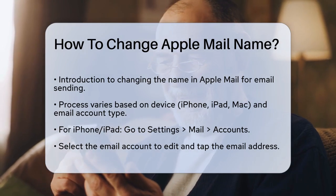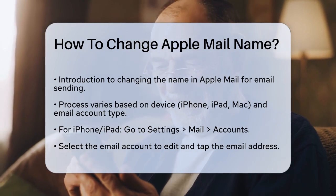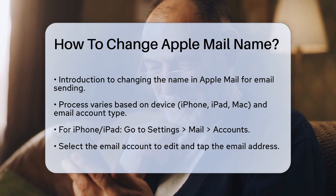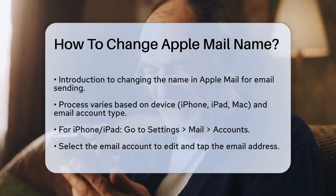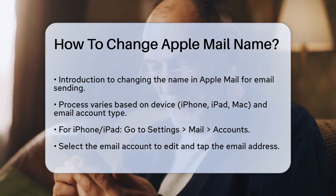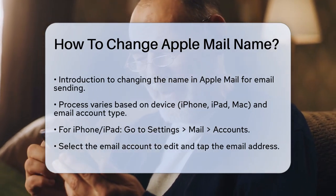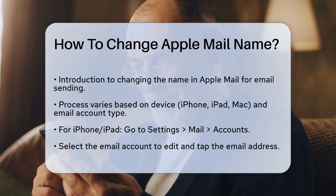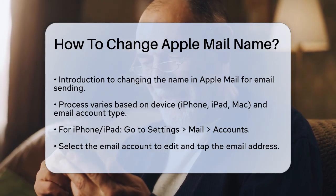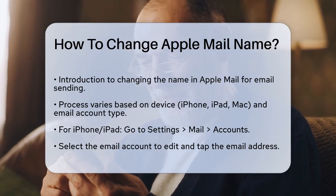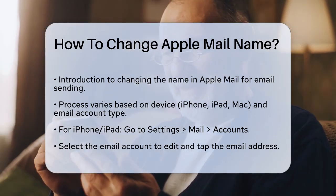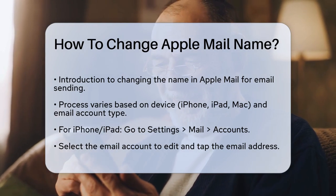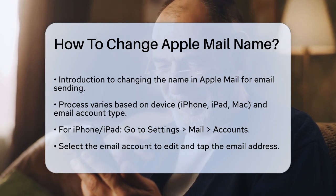On iPhone and iPad, if you're using the built-in Mail app, here's what you need to do. Go to Settings, then select Mail. Tap on Accounts and choose the email account you want to edit. Tap the email address shown next to Account. Delete the current name and replace it with the new one. Tap Done to save the change.